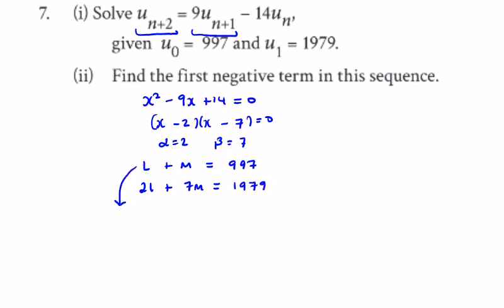If I multiply this by minus 2, I will get minus 2l minus 2m equals minus 1994. Giving me 5m to be minus 15, so m is minus 3.